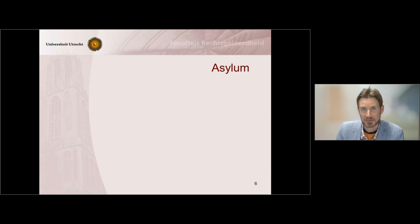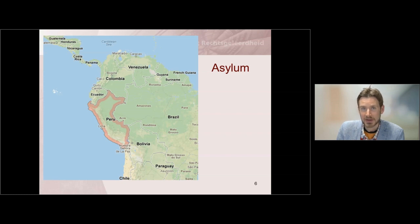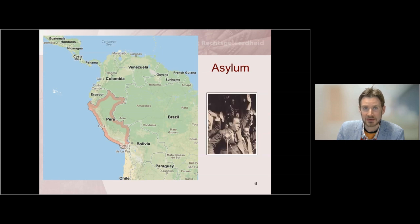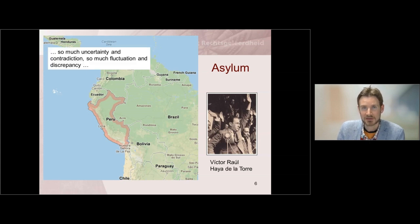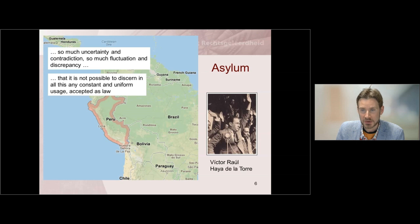Let's look at state practice with the help of examples from ICJ case law. First, the Asylum case between Peru and Colombia. It concerned a revolution led by Victor Raul Haya de la Torre. His revolution failed, so he fled the authorities and sought refuge in the Colombian embassy in Lima. Colombia wanted Peru to allow him safe passage out of Peru, but Peru refused. The question put to the court was whether there was a rule requiring Peru to allow him to leave the country. The court looked at state practice and found so much uncertainty, contradiction, fluctuation, and discrepancy that it was not possible to discern any constant and uniform usage accepted as law.